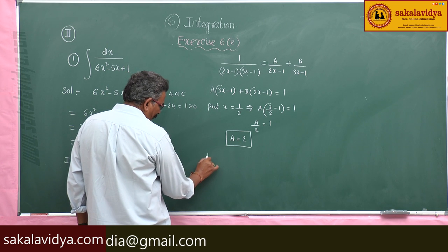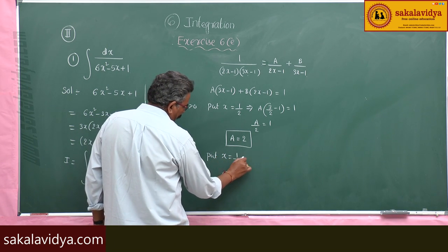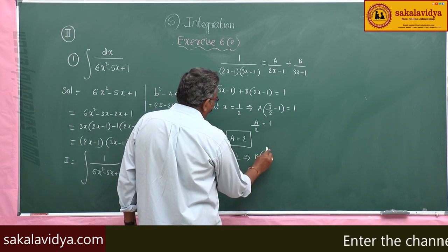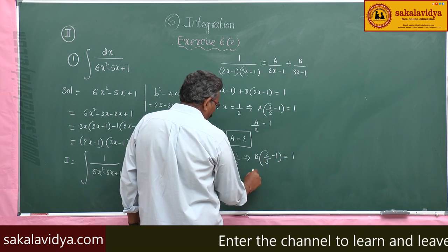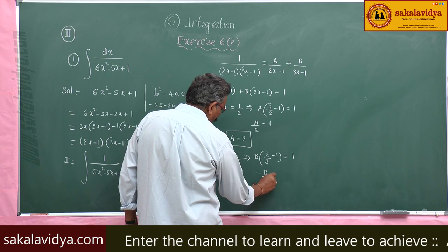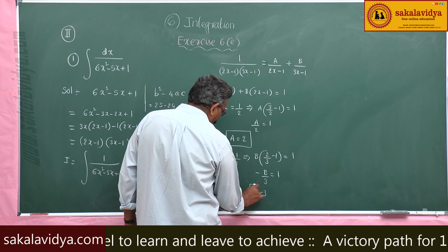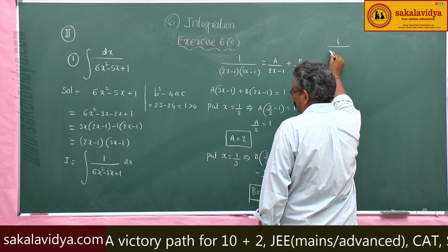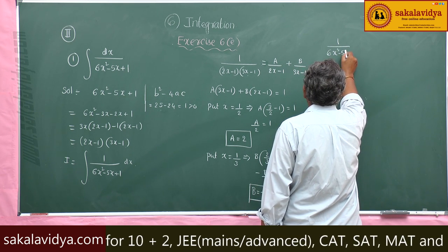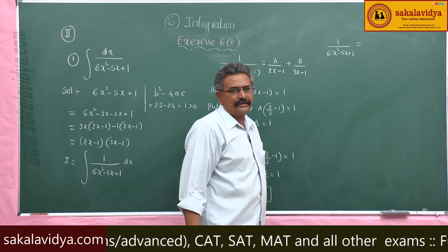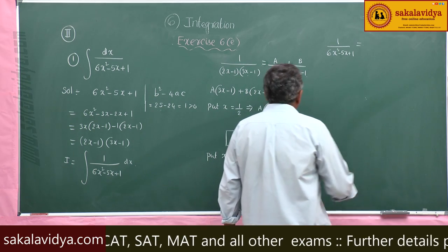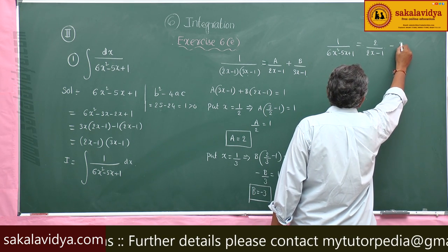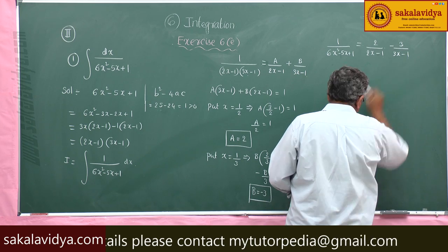In a similar manner, put x = 1/3. The A term becomes zero. B(2/3 - 1) = 1, so -B/3 = 1. Therefore B = -3. So the partial fractions are: 1/(6x²-5x+1) = 2/(2x-1) + (-3)/(3x-1). These are the partial fractions.